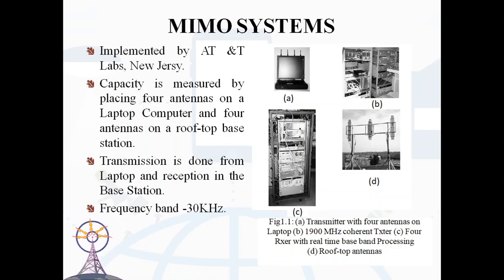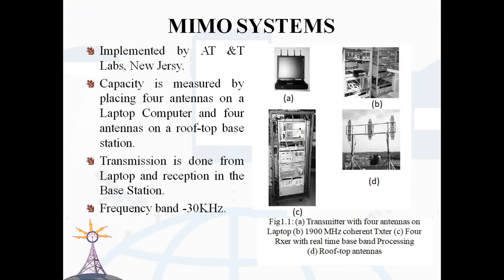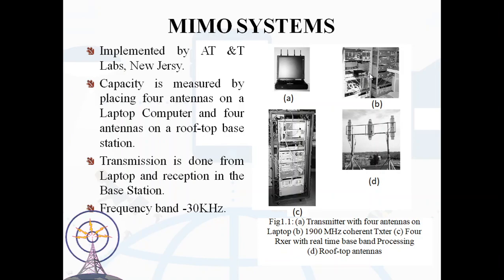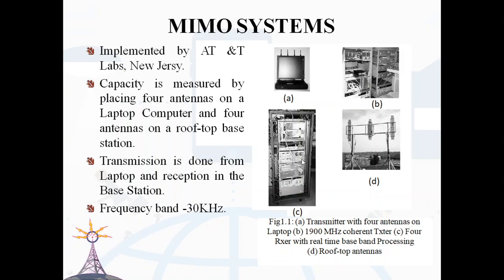The frequency band used for testing was 30 kHz with dual polarized, spatially separated antennas in both the base station and the laptop. This figure shows the transmitter with 4 antennas on a laptop. This figure shows a 1900 MHz coherent transmitter. This figure shows 4 receivers with real-time baseband processing. This figure shows the rooftop antennas.